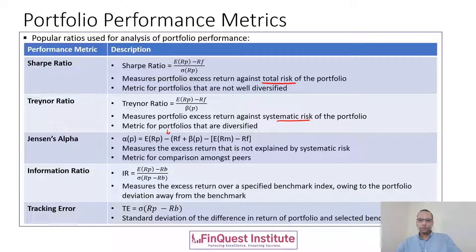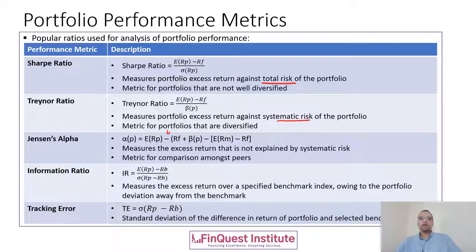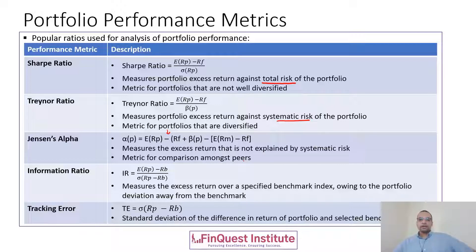Jensen's alpha is a popular metric for comparison amongst peer firms or peer portfolio managers. Next is the information ratio. The information ratio is defined as the excess of your portfolio return over a certain benchmark. Unlike the Sharpe ratio, we are not restricted to the risk-free rate — we have the liberty to choose a custom benchmark against which we compare our portfolio return.